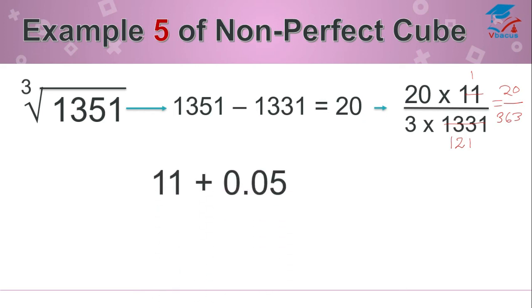After dividing, you will get it, it becomes 0.05. Add it to 11, that is perfect cube root of 1331, and your answer will become 11.05. I hope you must have understood this concept with 5 examples.